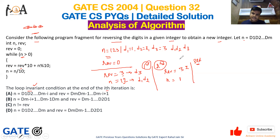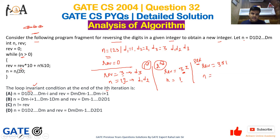In the third iteration, rev becomes 32 into 10, which is 320, plus n modulus 10 — n is 1, so 1 modulus 10 is 1 — giving 320 plus 1, which is 321. And n becomes 1 divided by 10, which is 0. So after the third iteration, rev = 321 and n = 0.